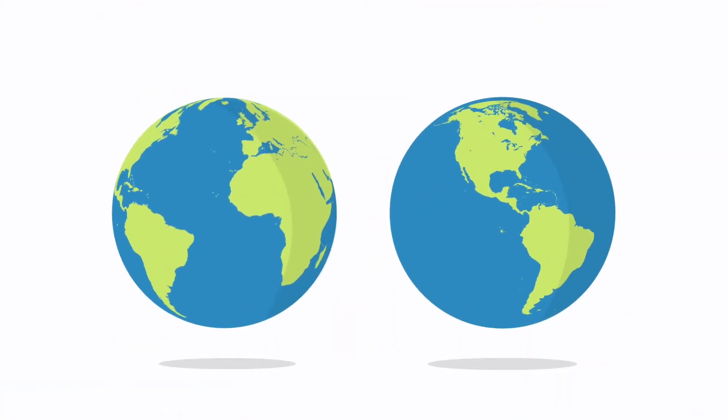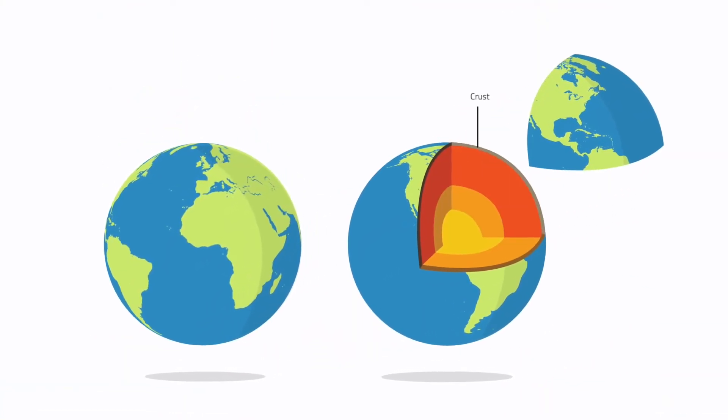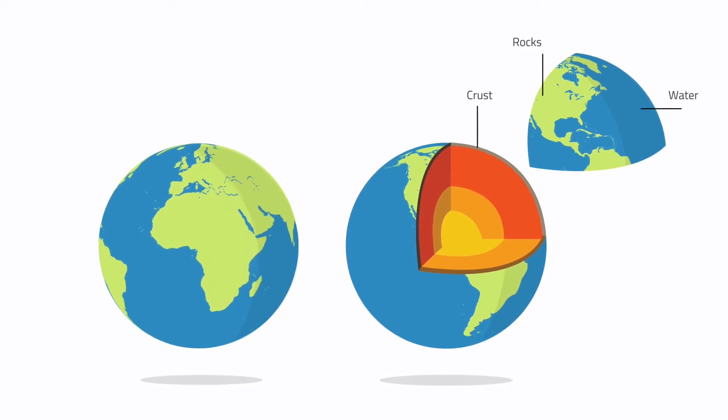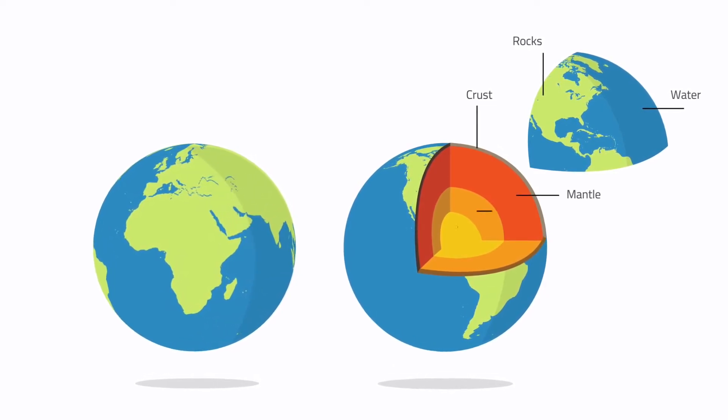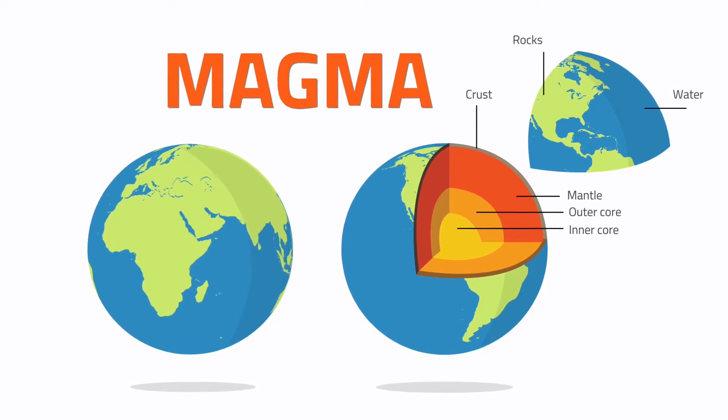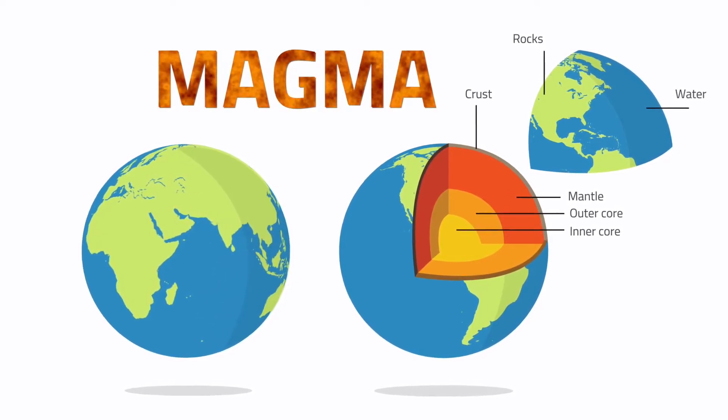The deeper you travel into the Earth, the hotter it gets. The Earth's crust is made of rocks and water. Underneath the Earth's crust is a layer of hot molten rock called magma, which is even hotter than the Sun's surface.